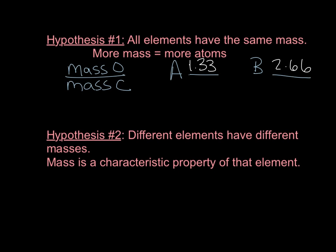What we found out as we worked through worksheet number 1 was that when we found the mass of oxygen to the mass of carbon, that ratio was for compound A: 1.33 — meaning 1.33 grams of oxygen for every 1 gram of carbon. And for B, it was 2.66, or 2.66 grams of oxygen for every 1 gram of carbon. Obviously, these two are not the same compound, because if they were, they would have the same ratio of oxygen to carbon. No matter how much of the compound you have, the ratio stays the same.